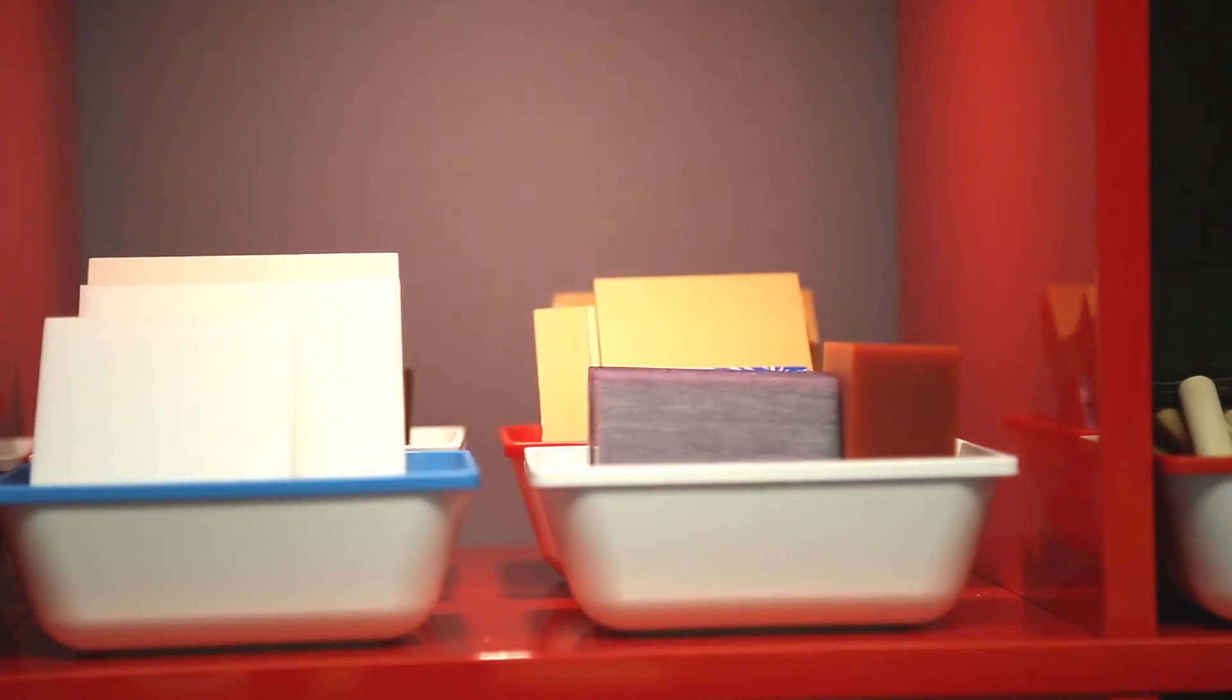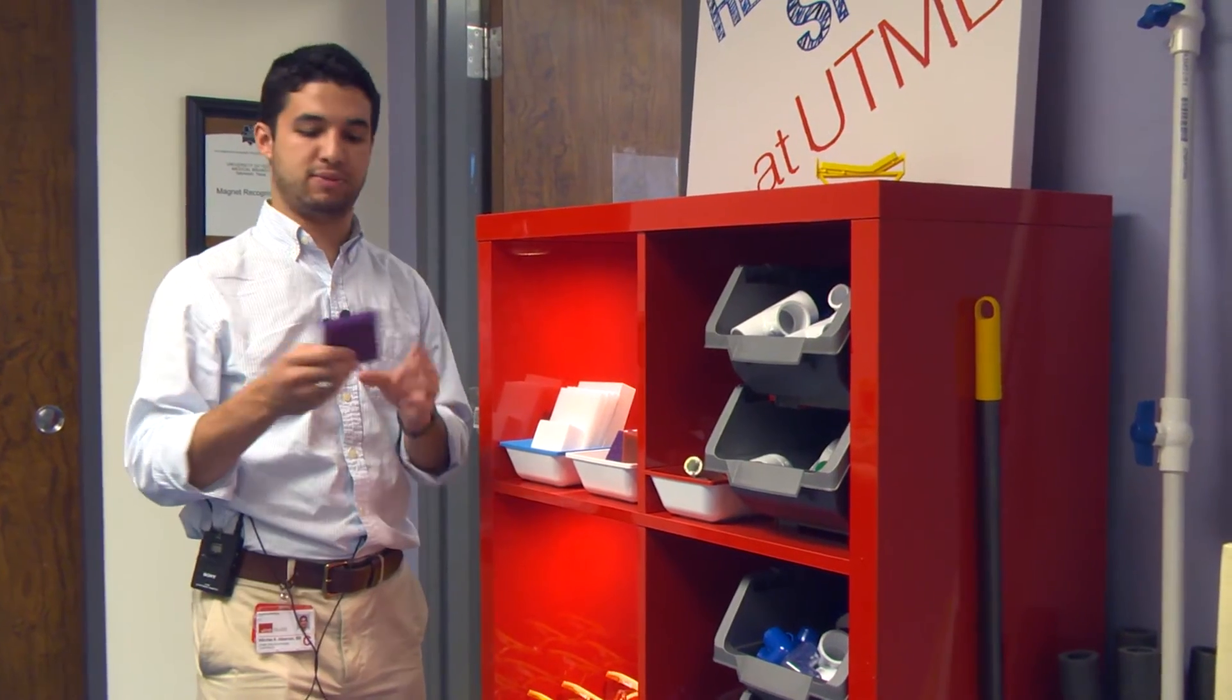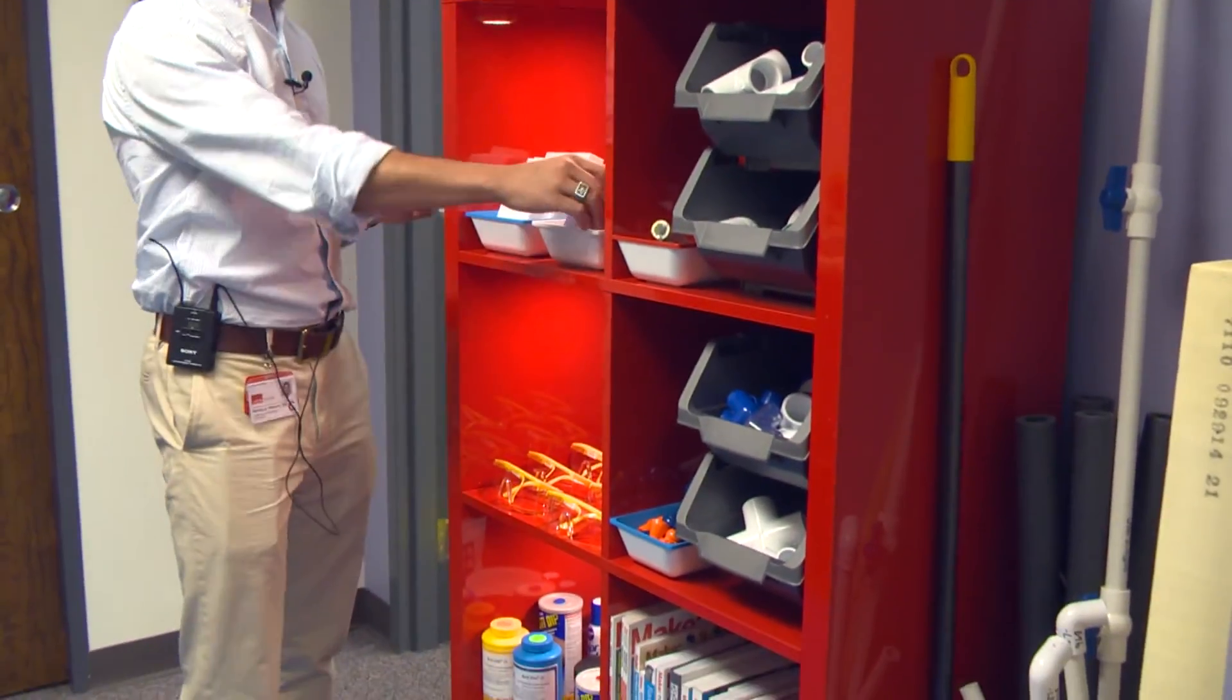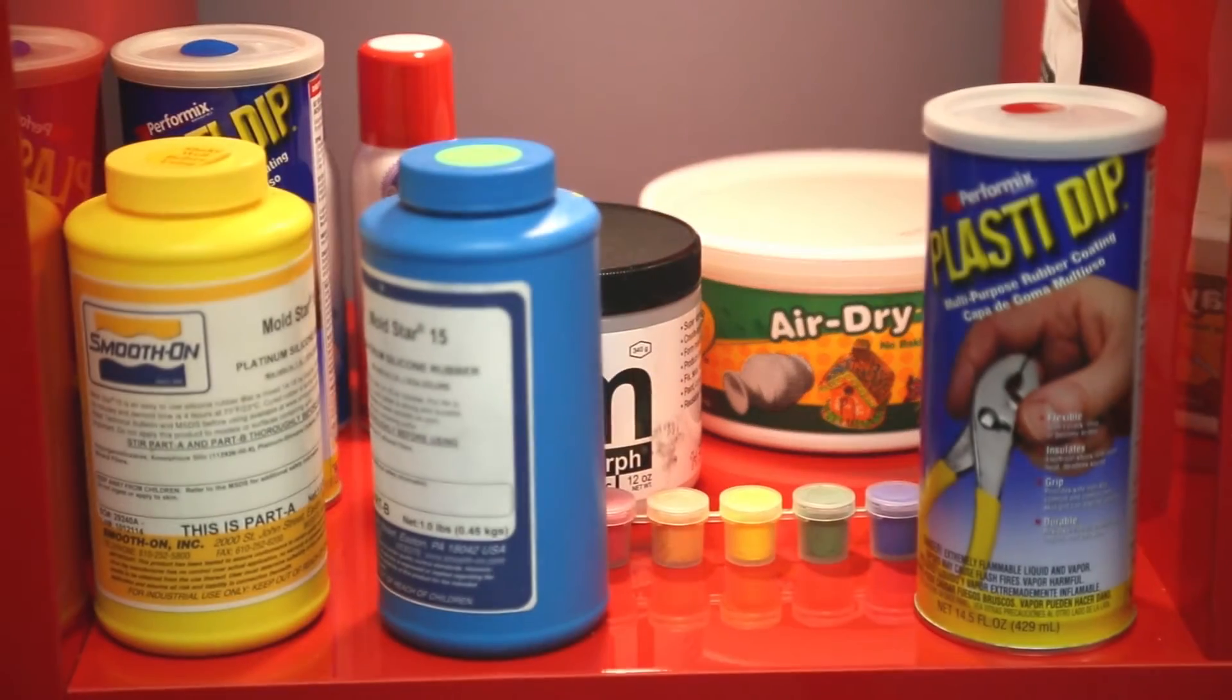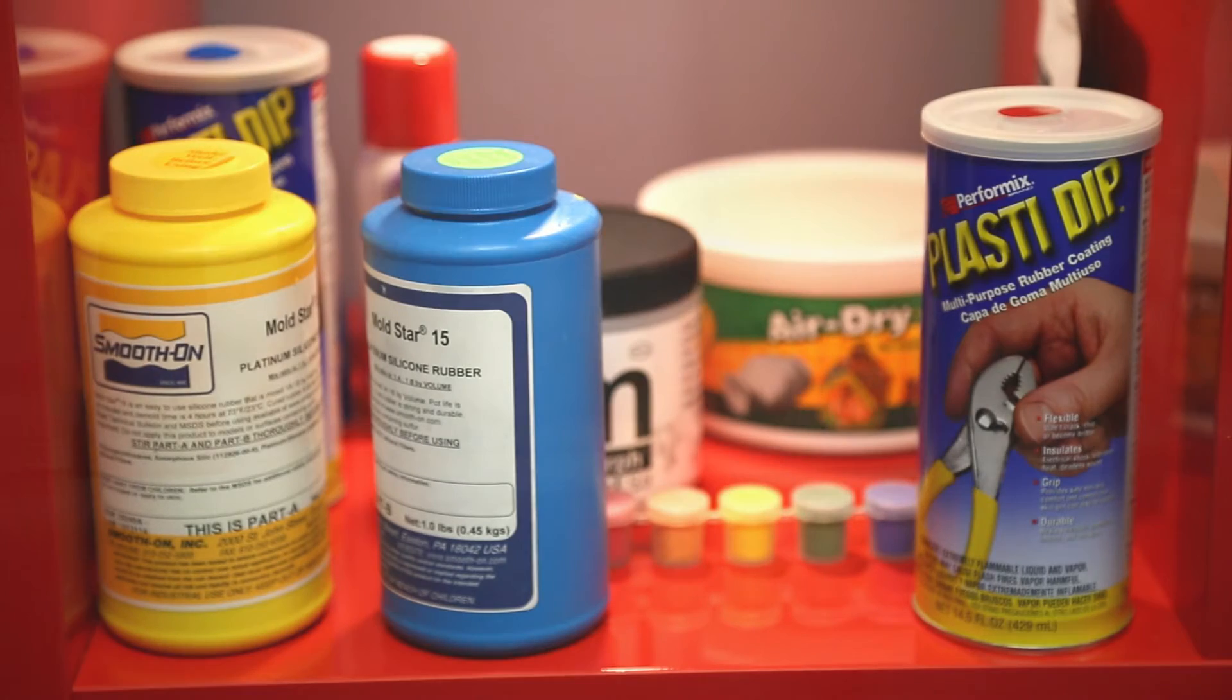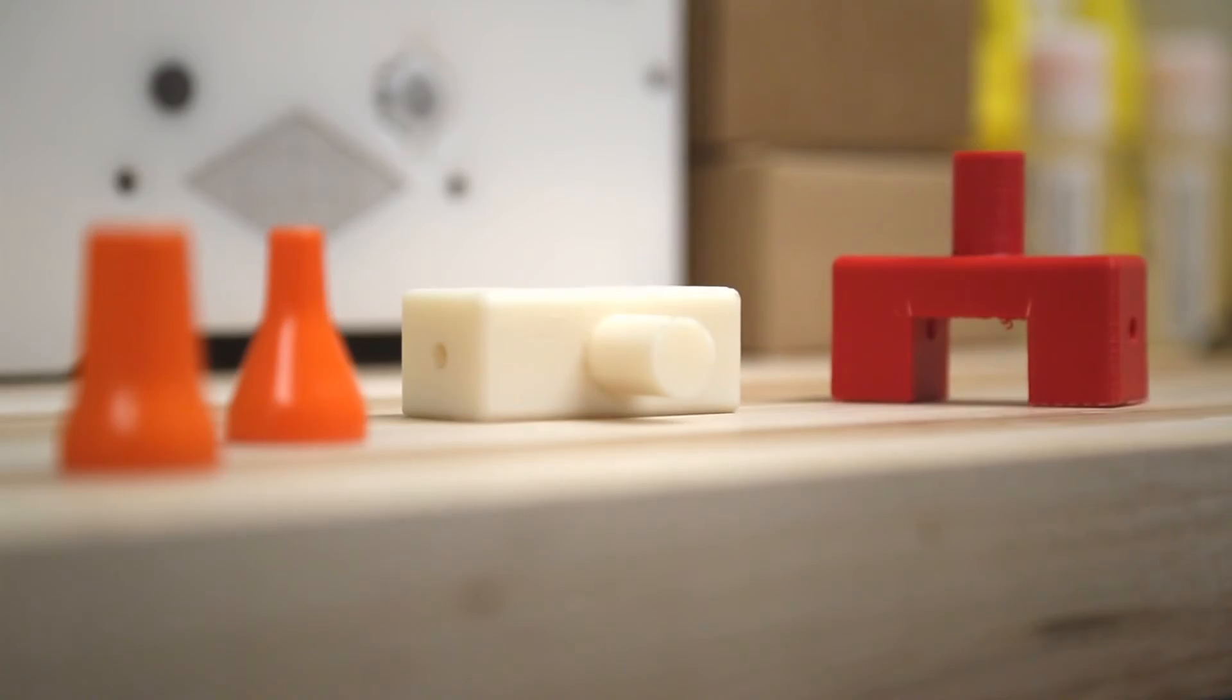Over here we've got a variety of other materials that can be cut into different shapes. So using the CNC mill we can cut wax and linoleum and all types of different plastics. Additionally we've got mold making materials so that if nurses want to make custom shapes and custom clips they can use the mold making material to do that.